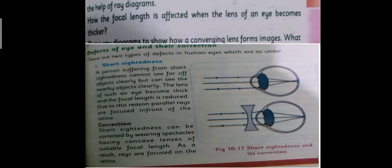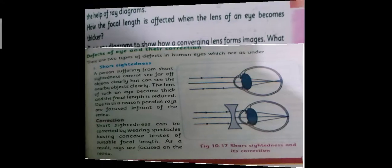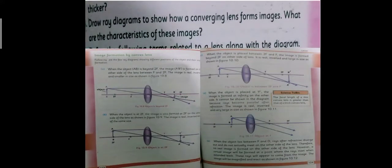Let's move toward the second question, that is how the focal length is affected when the lens of an eye becomes thicker. So they are asking for short sightedness, because what happens in short sightedness is that the eye lens is thick. That is why the rays create a focal length before where it should be created. That is why the person who has a problem when the lens is thick, it affects short sightedness. So you will put your answer from this page.